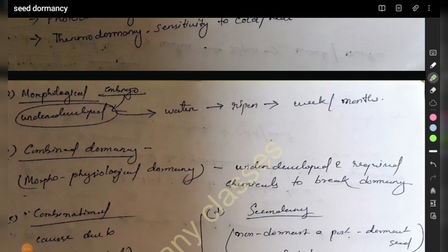Morphological dormancy involves an underdeveloped embryo where water is absorbed but growth is incomplete.